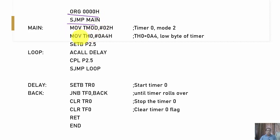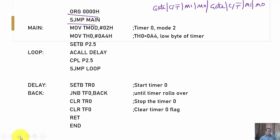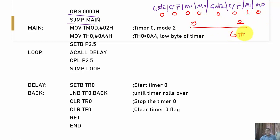In the program: first, load TMOD with 02h. The TMOD bit configuration for timer 1 is 0000 (not used) and for Timer 0 in Mode 2 (M1=1, M0=0) the lower nibble is 0010 — giving 02h. Then load A4h into TH0 as the calculated count value.